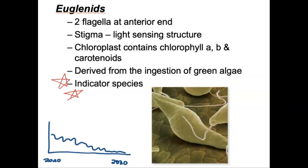I'm going to pause it here, and on the next part we will wrap up supergroup Excavata. We have the Kinetoplastids, which are a subcategory of the Euglenozoans. Check out the next part.